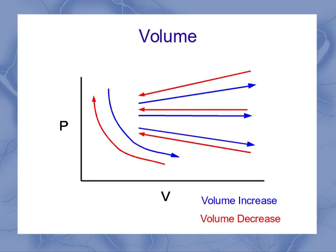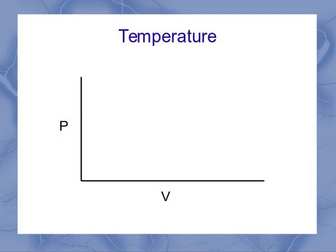Now, notice pressure and volume can both be changing. So you might have to look at the up-down and the left-right at the same time. Now, we can also look at temperature. It may not be immediately obvious how temperature is shown on a PV diagram. After all, I've got just pressure and volume here.